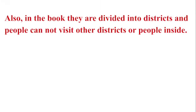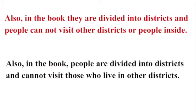Here's the same problem. 'Also in the book, they are divided into districts and people cannot visit other districts or people inside.' That's vague — I think just visiting other districts is enough without saying anything about going inside. I would rewrite this: 'Also in the book, people are divided into districts and cannot visit those who live in other districts.' That's clearer and avoids the vagueness of 'they.'